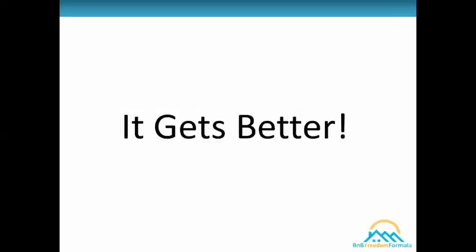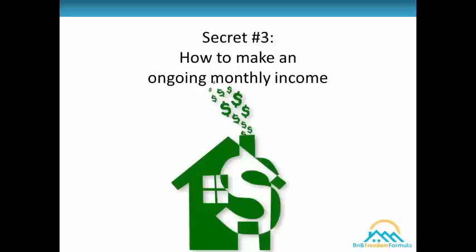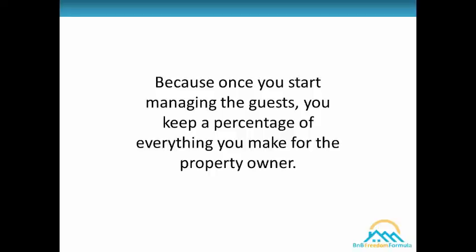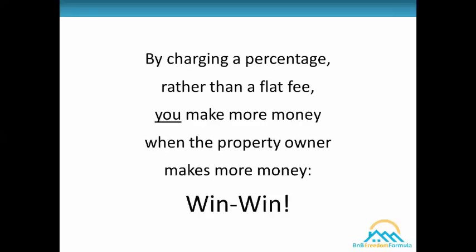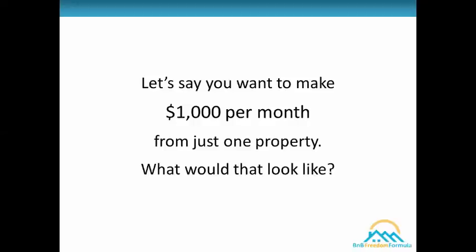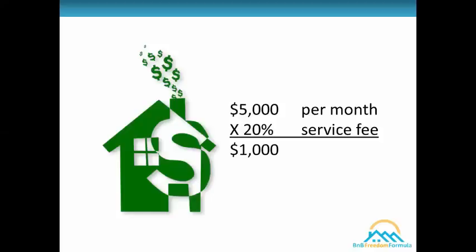But it gets better — let's go on to mind-blowing secret number three: how to make an ongoing monthly income. After you get paid to set up the account, you can collect a monthly income of 10 to 20% or more of the revenue you bring in for the owner on an ongoing basis. Because once you start managing the guests, you keep a percentage of everything you make for the property owner. By charging a percentage rather than a flat fee, you make more money when the property owner makes more money — it's a win-win. For example, if you want to make $1,000 per month from one property, you'd just need a property bringing in $5,000 a month and you keep 20%.